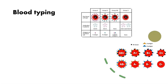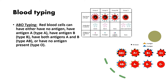Let's talk about blood typing — it's an important concept. ABO typing is based on the fact that red blood cells can have no antigens or different types of antigens. They can have type A antigen on the surface, making it blood group A; B antigen, making it group B; both antigens, giving you blood type AB; or no antigens at all, which makes you type O.